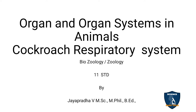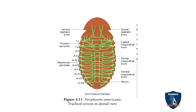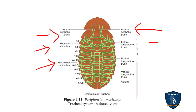So what are the parts seen in the respiratory system of cockroach? First you can see the ventral cephalic trunk — ventral is the back side — and the dorsal cephalic trunk. Then thoracic spiracles and the abdominal spiracles. On this side you can see the lateral longitudinal trunk, dorsal longitudinal trunk, ventral longitudinal trunk, and the atrium.